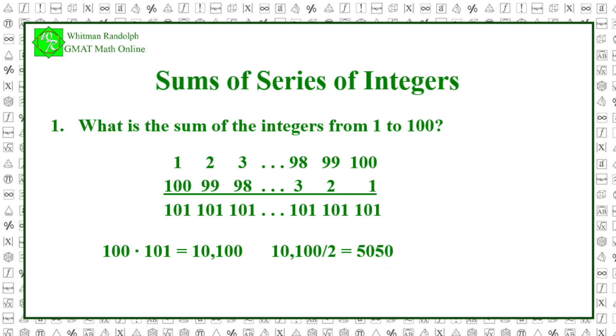You might be interested in the general formula. The formula for the sum of the integers from 1 to n is n times n plus 1 over 2.